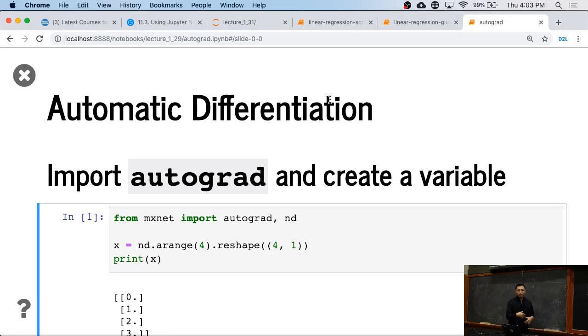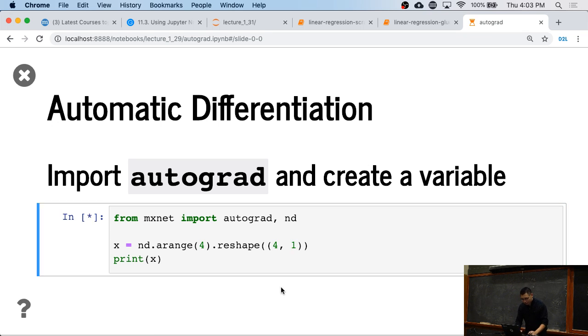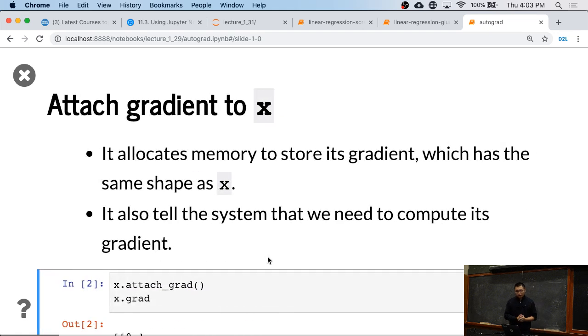So, we already mentioned that there's an autograd module in MXNet, which can be used to compute gradients in default. Here we first create X, which is a 4 by 1 vector. One key thing is here, we need to attach gradient to X.